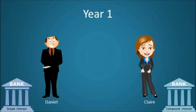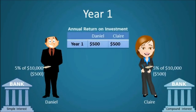After the first year, both Daniel and Claire made $500, or 5%, on their initial deposit. However, for all subsequent years, Claire's interest is earned on both her principal as well as on the interest she earned in year 1, rather than 5% on only her principal deposit of $10,000.